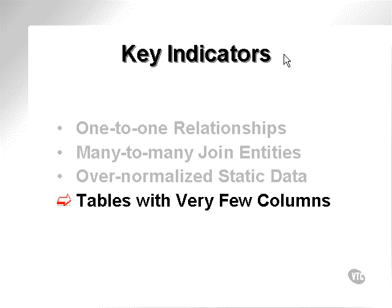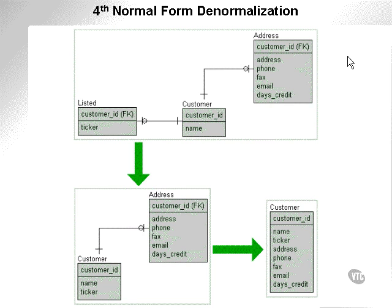Tables with a very small number of columns — very few columns — quite often indicates a table which could have its columns in a parent table. It shouldn't really exist. Fourth-normal form denormalization: my key indicator here would be one-to-one joins.